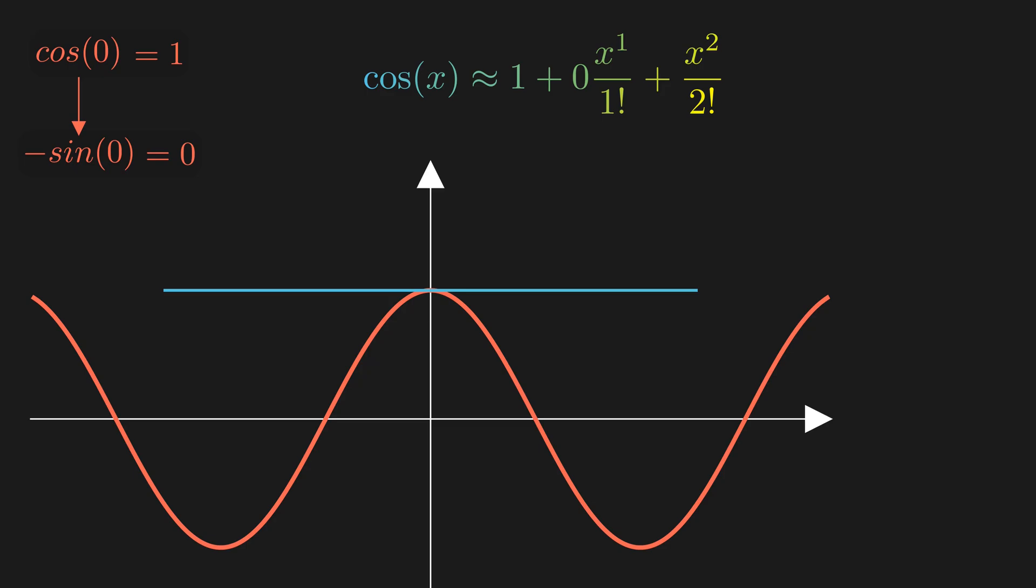The second derivative of cosine is negative cosine, which equals negative 1 at x equals 0, so the coefficient of the x squared term should be negative 1. Now the polynomial looks like this, much better. We can keep going.